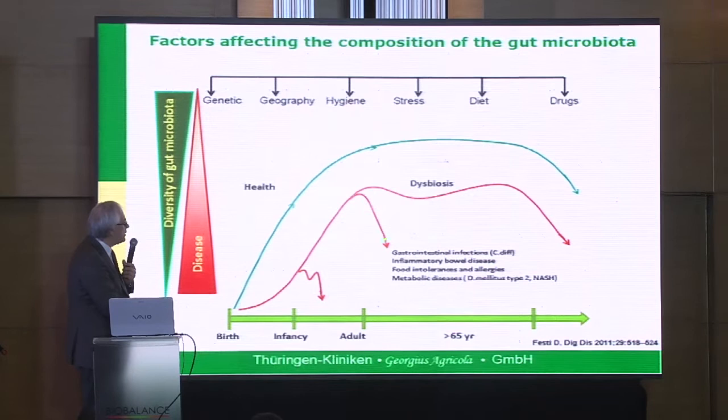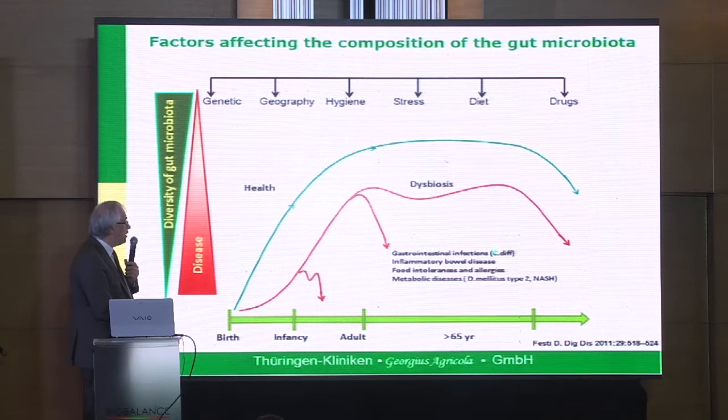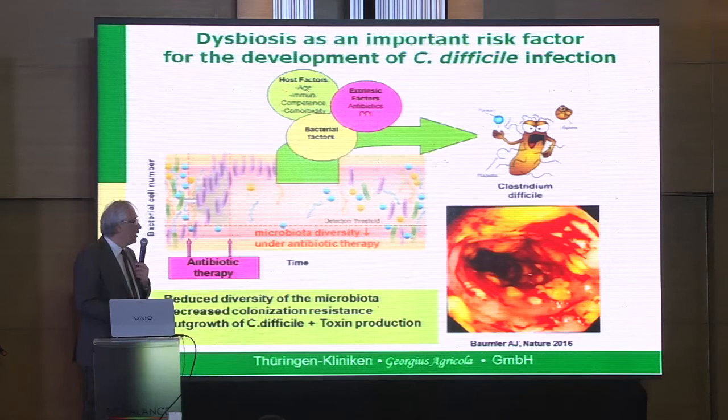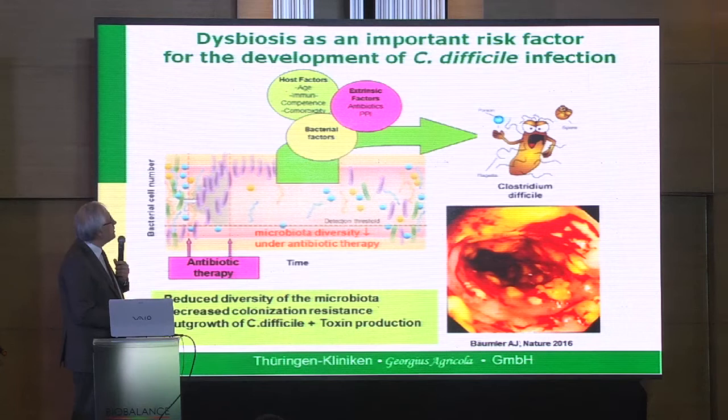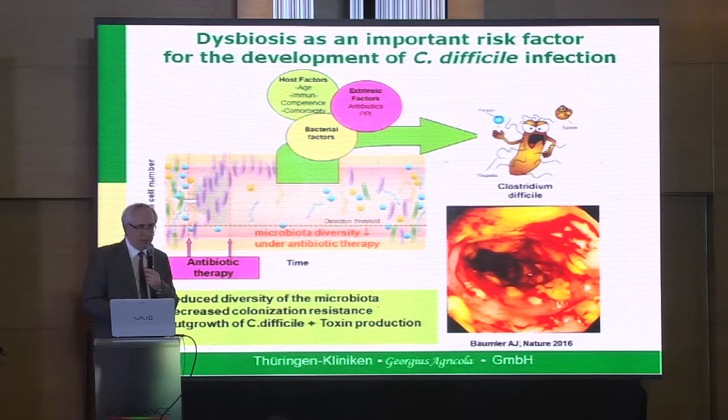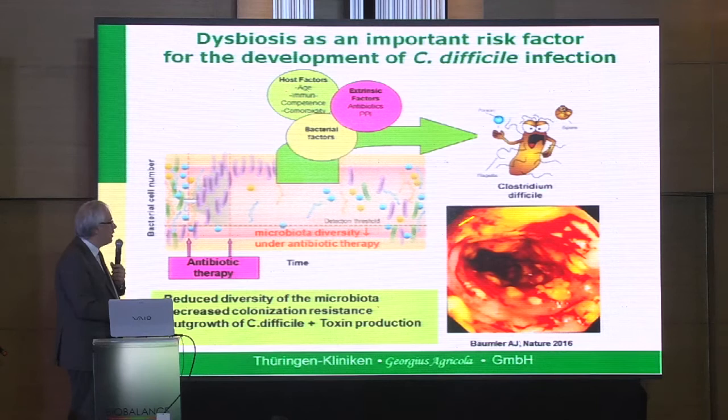These factors may lead to so-called dysbiosis, which results in a number of problems in the gastrointestinal tract, especially like Clostridium difficile infection, inflammatory bowel disease, intolerances, but also outside the gastrointestinal tract. Let me talk about the most important link between gut bacteria and infection — it is the Clostridium difficile infection. It is the most common infection in Europe in the hospital.